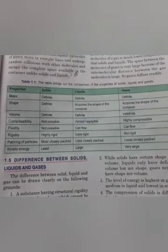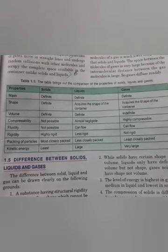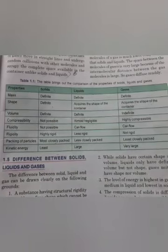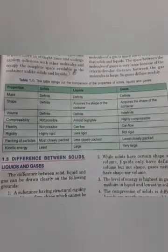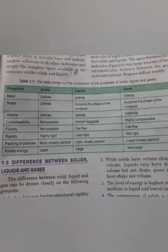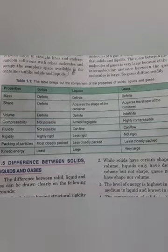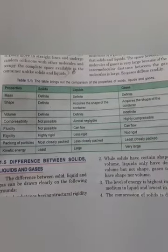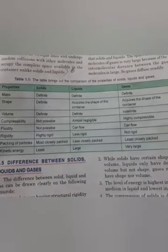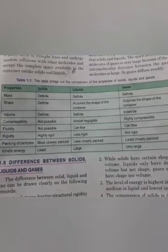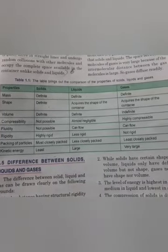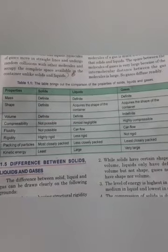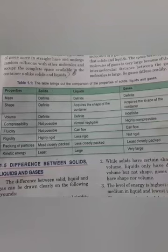In solids, molecules are very closely packed due to which they cannot flow. But liquids and gases can flow, so they are called fluids. Rigid means it becomes difficult to change their shape. In solids molecules are very closely packed so they are highly rigid. In liquids molecules are not very closely packed so they are less rigid. In gases they are least rigid.